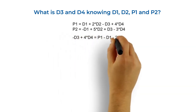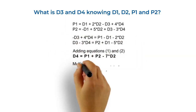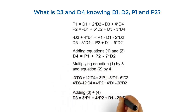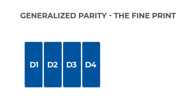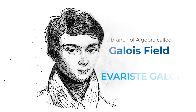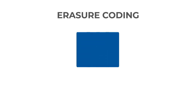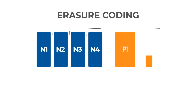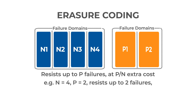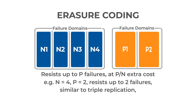Fundamentally, all you need is basic math skills in linear algebra. However, for practical implementation extrapolated to large amounts of data, you use a branch of algebra called Galois Field. This scheme is essentially the foundation of erasure coding. Data is cut into N chunks, and the parities are erasure codes. The number of parity blocks correspond to the number of failures the system can resist. In this example, where N equals 4 and P equals 2, the system can tolerate up to two failures, similar to triple replication, but only requires an overhead capacity of 50% versus 200% for triple replication.